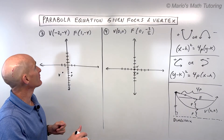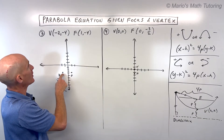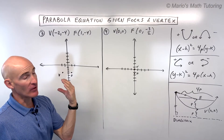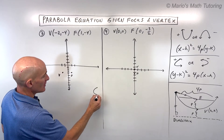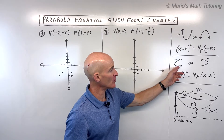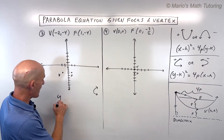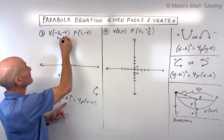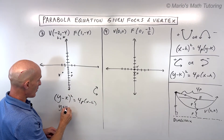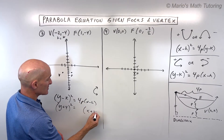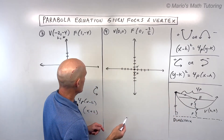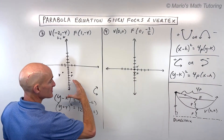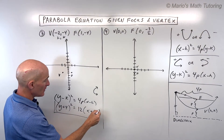For number 3, the vertex is at (-2, -4) and the focus is at (1, -4). The parabola always opens from the vertex towards the focus, so this parabola opens to the right. Since it opens right or left, we're dealing with a y-squared type: y minus k squared equals 4p times x minus h. With h and k as the vertex coordinates, it becomes y minus negative 4, which is y plus 4, and x minus negative 2, which is x plus 2. P is the distance from the vertex to the focus, which is 3 units. 4 times 3 is 12, and since it opens to the right, this is positive.